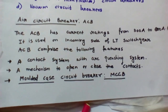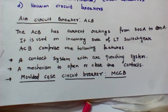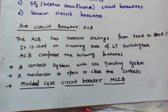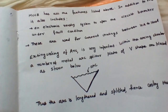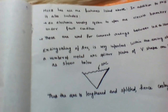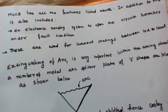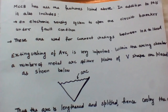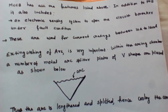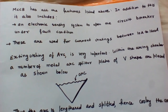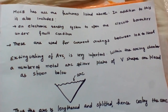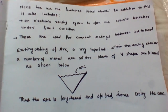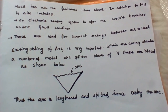The molded case circuit breaker, denoted as MCCB, is very similar to the air circuit breaker but has some additional features. The additional features include an electronic sensing system which is able to detect a fault and then open the circuit breaker under fault conditions. The current ratings are from 10 amps to 1600 amps.